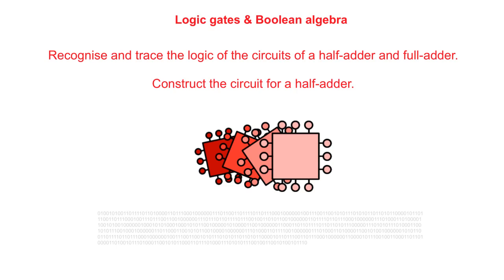In the earlier videos in this series, we took a look at how to define Boolean logic and the notation OCR will use in their exam, the various logic gates and their associated truth tables, and how to simplify expressions using Karnaugh maps. We're about to embark on some tricky material, so it's highly recommended that you start by going back over these earlier videos to make sure the basics are fresh in your mind.